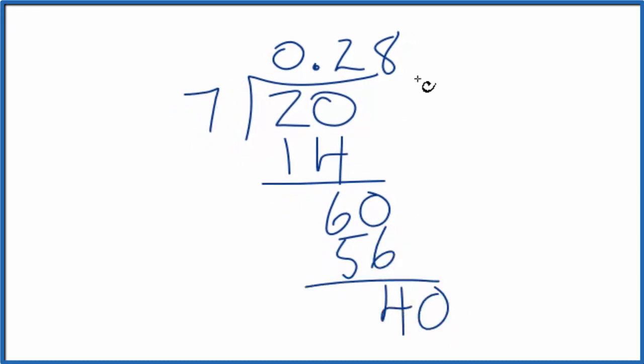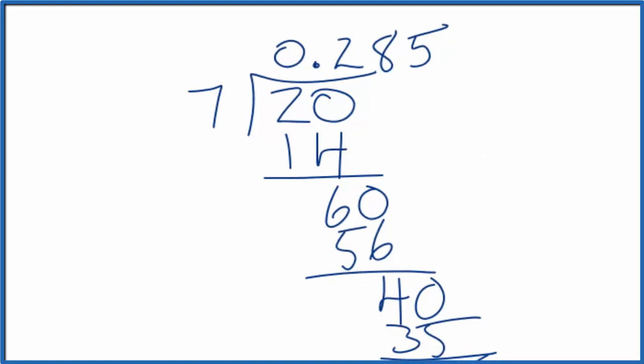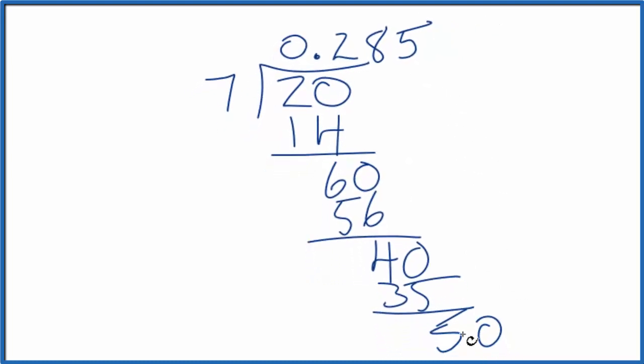7 goes into, we'll move over 1, 40. 7 times 5, that's 35. And we could keep going with this for a while. 7 times 7 is 49, and so on.